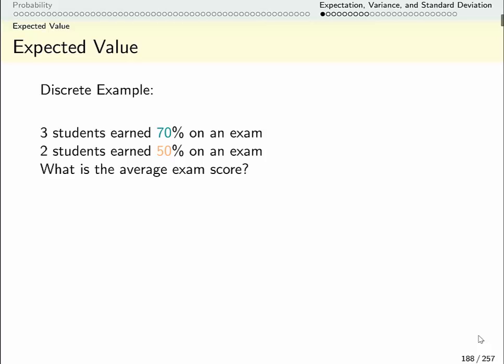Let's say I want to know the average on an exam and there's a lot of repetition. Three students got 70% and two students got 50%. The usual way to compute an average is to add all these up and divide by the number of them that there are.